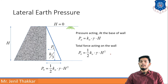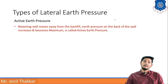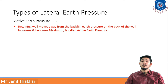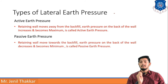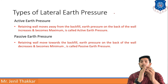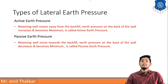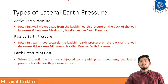Lateral earth pressure is divided into three types. First, active earth pressure: when the retaining wall moves away from the backfill, the earth pressure on the back of the wall increases and becomes maximum — this is called active earth pressure. Second, passive earth pressure: when the retaining wall moves towards the backfill, the pressure becomes minimum — this is known as passive earth pressure. Third, earth pressure at rest: when no lateral movement occurs, the total pressure is known as earth pressure at rest.